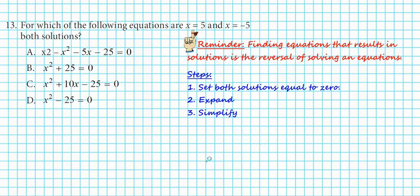Let's take a look at question number 13. It says: for which of the following equations are x equals 5 and x equals negative 5 both solutions? We are provided with solutions and asked to find an equation — we're working backwards, reversing the process. We have two solutions or two roots, so we're creating a quadratic equation that has 5 and negative 5 as its solutions. We'll set both equations equal to 0, then expand and simplify.